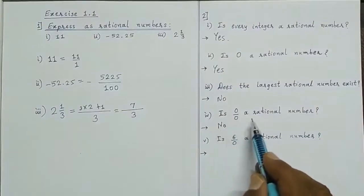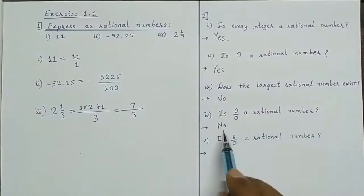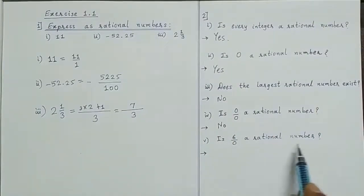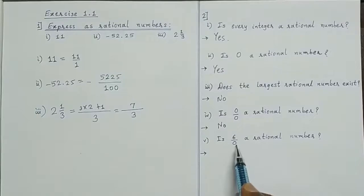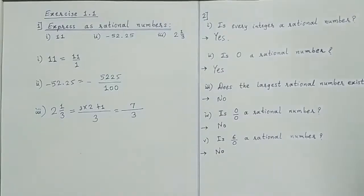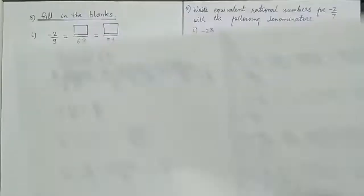Is 0 upon 0 a rational number? No. Is 6 upon 0 a rational number? No, because the denominator is 0. By definition it is not a rational number.